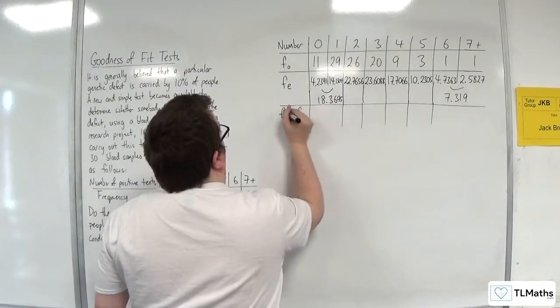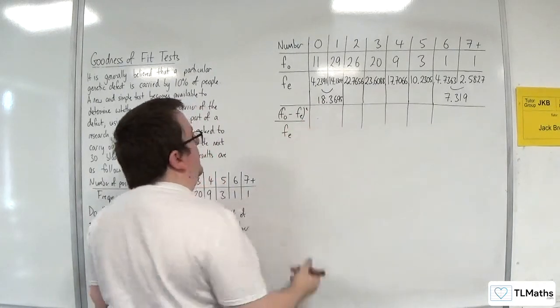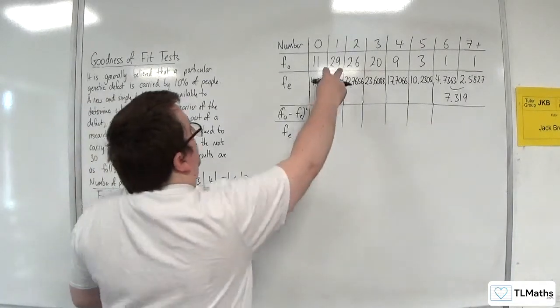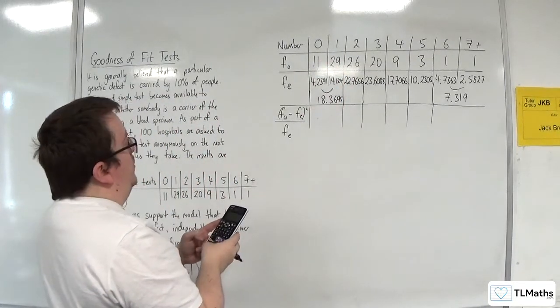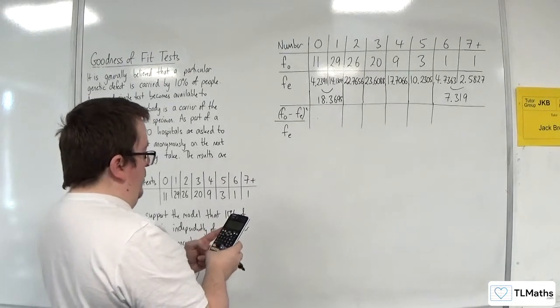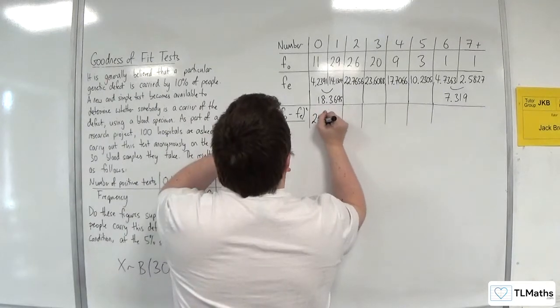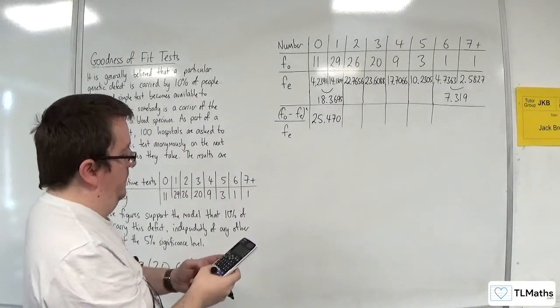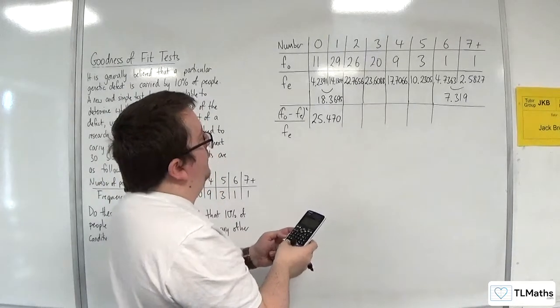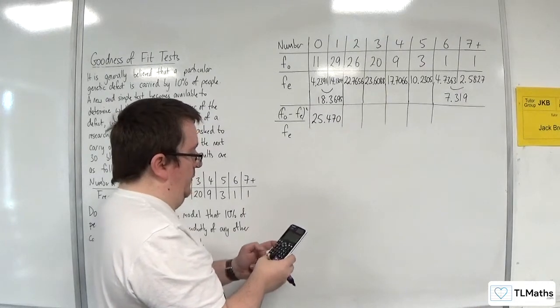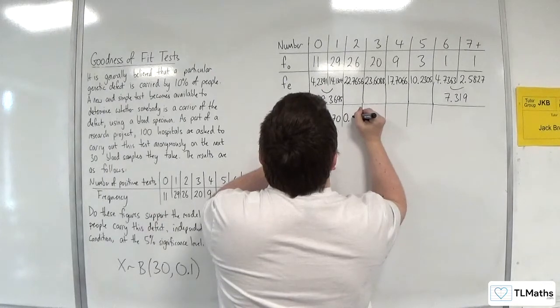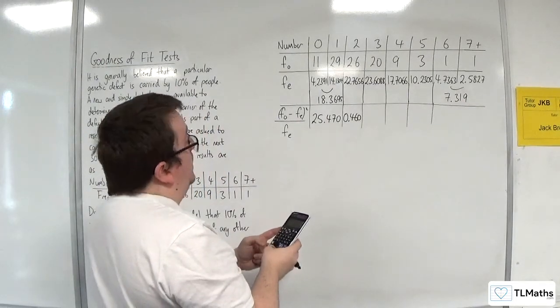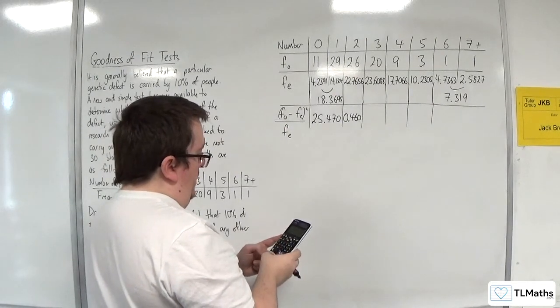Now the observed take away the expected squared divided by the expected. So we're combining these observes. That's 40 take away 18.3695 squared divided by 18.3695 and we get 25.470. It's quite large. Next one, 26 take away 22.7656 squared divided by 22.7656.